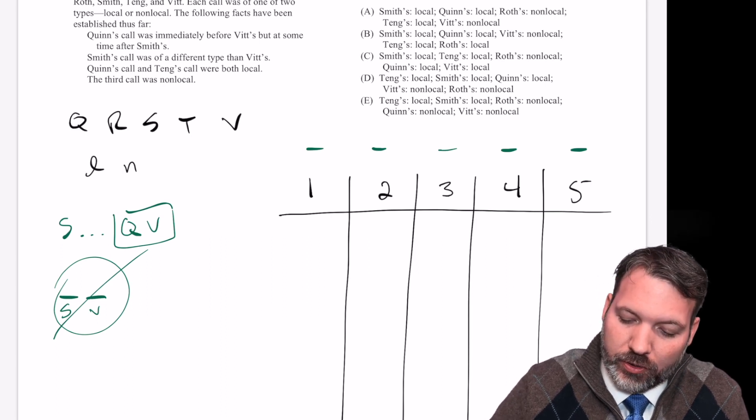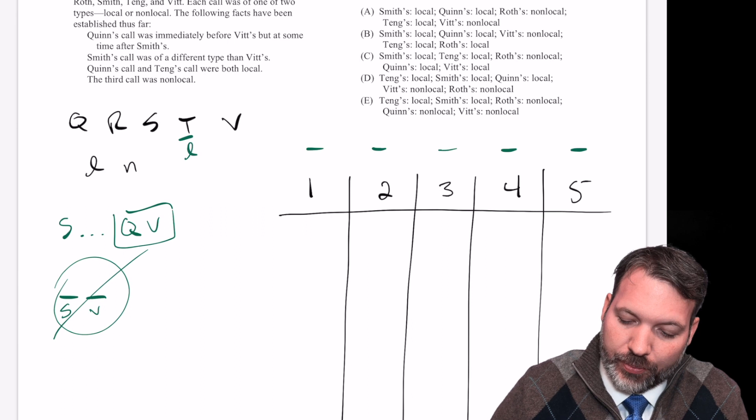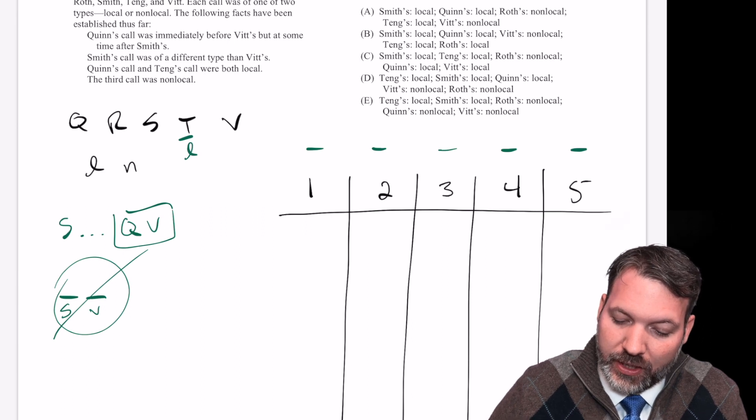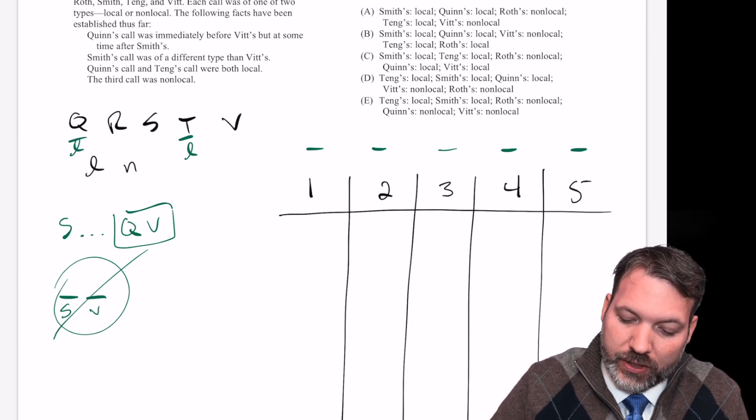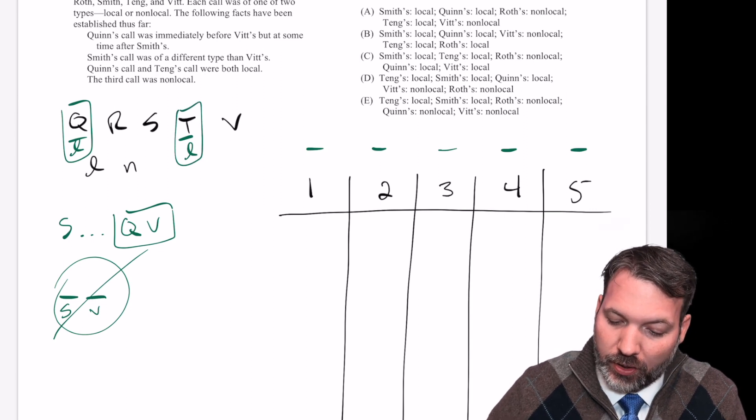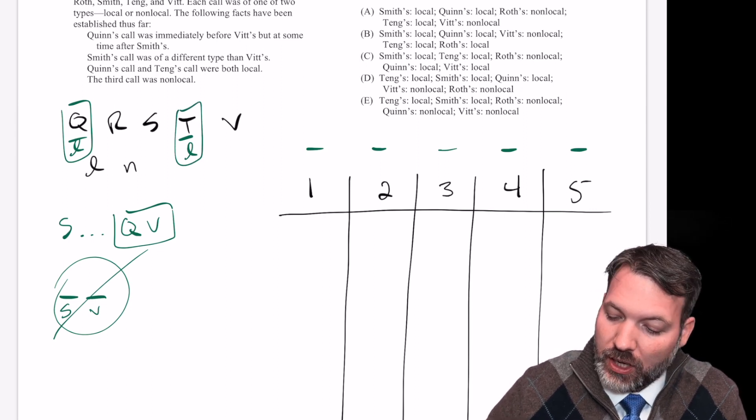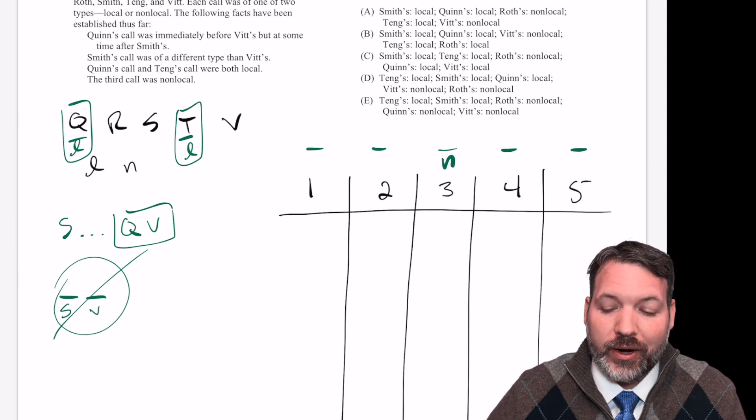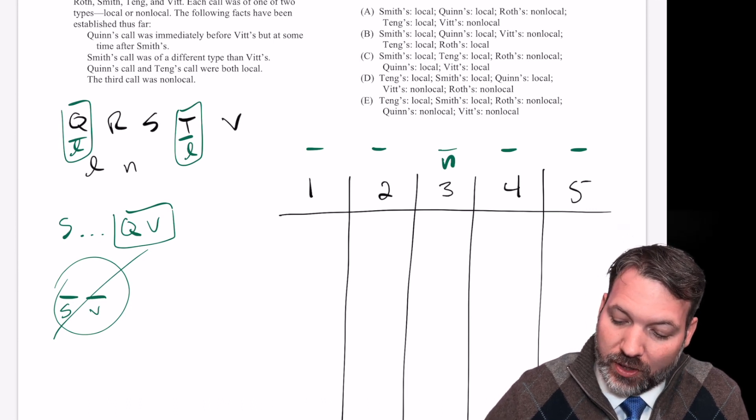Quinn's call and Tang's call were both local. So simple enough, we can actually just set that up on our elements right there. T is a local call. Q is a local call. And so we know for sure those two elements. The third call was non-local. Very nice. That can go right on our diagram. Third call is always going to be non-local.